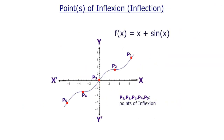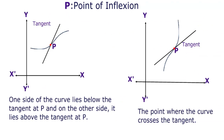Consider the graph of the function f(x) equal to x + sin x. The red dots — p1, p2, p3, p4, and p5 — are the points of inflection for this curve. Observe that one side of the curve lies below the tangent and on the other side it lies above the tangent at point p. This part of the curve is below the tangent and this part is above the tangent line. Therefore, we say p is a point of inflection.